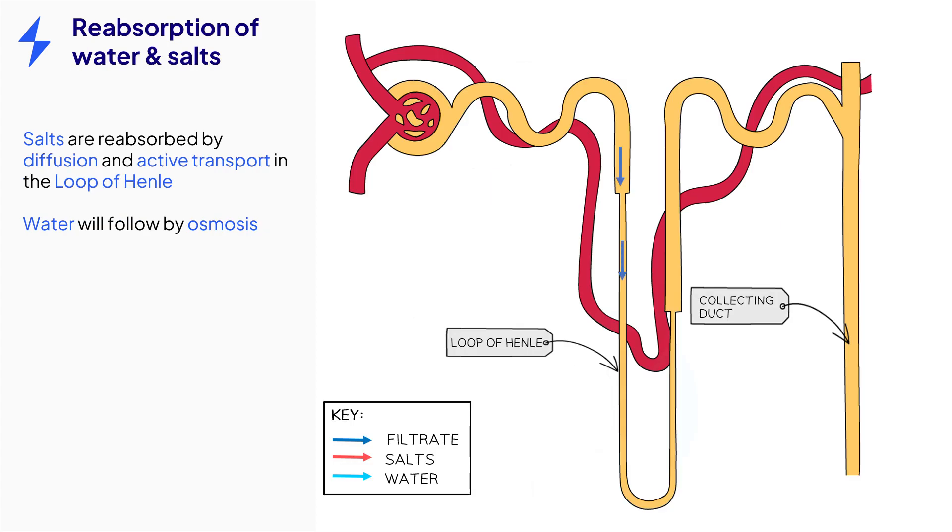As the filtrate enters the loop of Henle, salts are reabsorbed back into the blood by both diffusion and active transport. This will make the filtrate more dilute than its surroundings, which will allow water to move out of the filtrate due to osmosis.